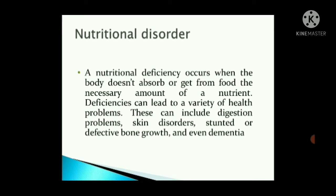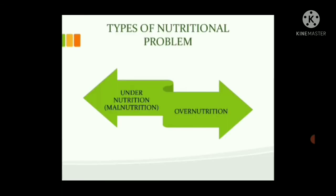A nutritional deficiency occurs when the body is not able to absorb or obtain a sufficient supply of nutrients. Deficiency can lead to a variety of health problems including digestion problems, skin disorders, stunted or defective bone growth, and even dementia. There are two types of nutrition problems: undernutrition, known as malnutrition, and overnutrition.